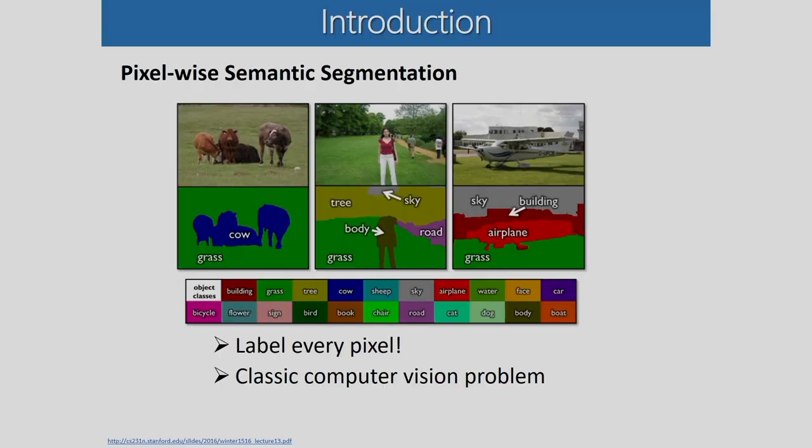Now let us discuss the CNN structure for semantic image segmentation. What is segmentation? Segmentation means the partitioning of an image into connected homogeneous regions. Homogeneity can be defined in terms of color value, texture information, or other information, and based on this homogeneity we partition the image. That means the separation of the foreground and the background. But what is semantic segmentation?